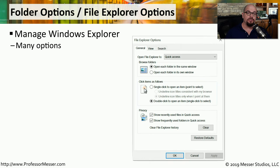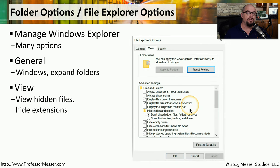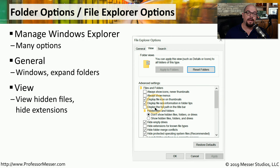If you want to make changes to Windows Explorer or File Explorer in Windows 10, you would choose Folder Options or File Explorer Options inside the Control Panel. The General tab allows you to configure how File Explorer is used — for example, you could change how the folders look on the screen, choose whether to use a single click or double click, and set privacy settings. The View tab allows you to configure exactly what you see on the screen, such as always showing icons and never showing thumbnails, and this is also where you configure File Explorer to show or hide hidden files and enable or disable viewing of file extensions.